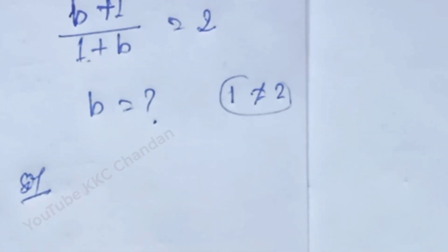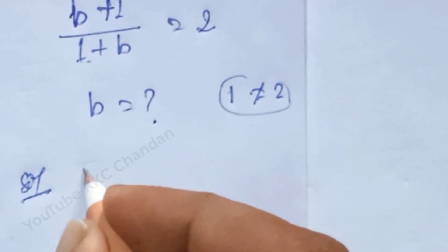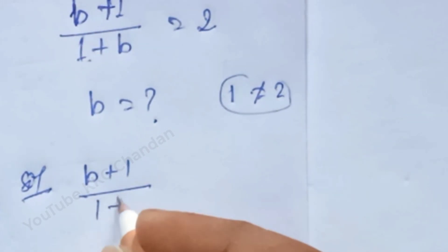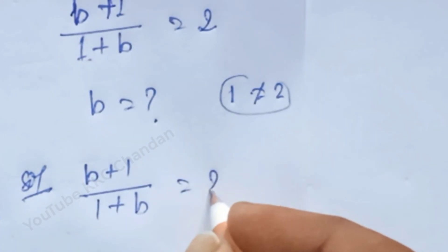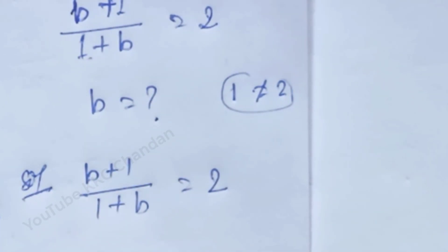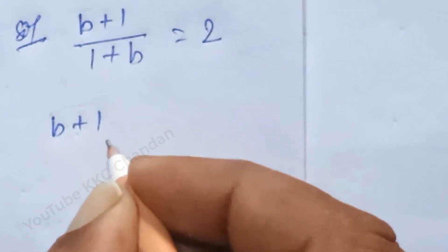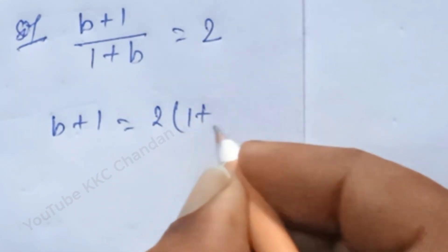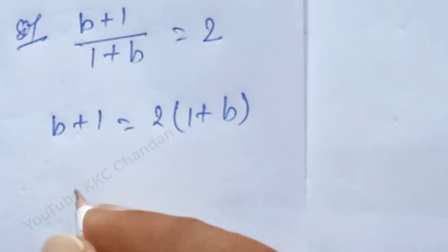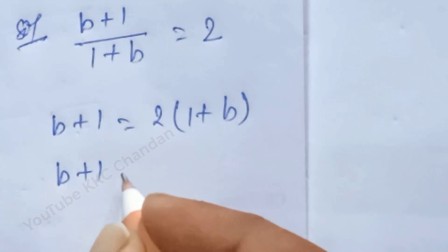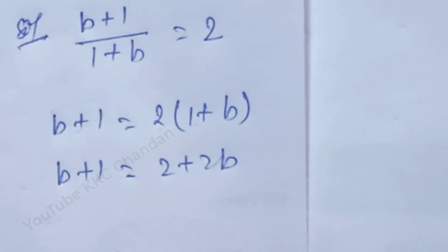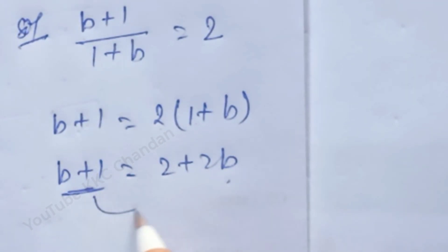Let us start the correct way to solve this problem. According to the question, b plus 1 divided by 1 plus b is equal to 2. After cross multiplication: b plus 1 is equal to 2 into 1 plus b. After that, b plus 1 is equal to 2 plus 2b.